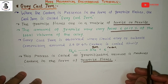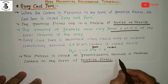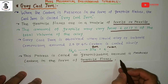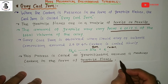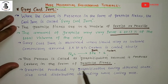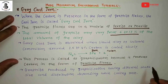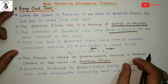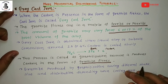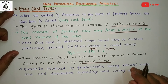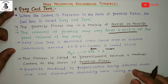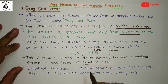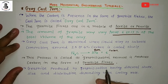This process is called graphitization because it produces carbon in the form of graphite flakes. The graphite produced by graphitization has different shapes, sizes, and distributions depending on the cooling rate. Additions of certain alloying elements such as nickel and aluminum also increase the graphitization process.